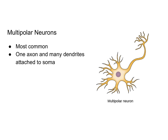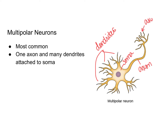Multipolar neurons are the most common, and these are the ones that we primarily talked about in the other videos. You can see that there is a soma or cell body, multiple dendrites — all of these cellular extensions here are dendrites — and then a single axon with multiple axon terminals.